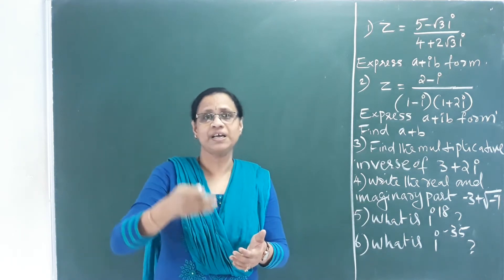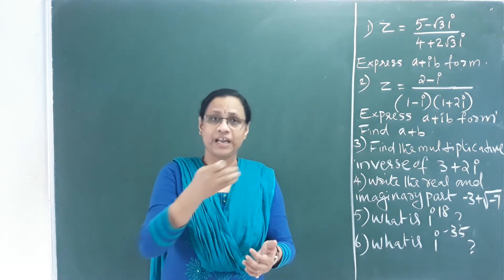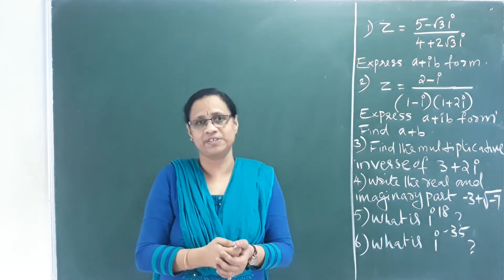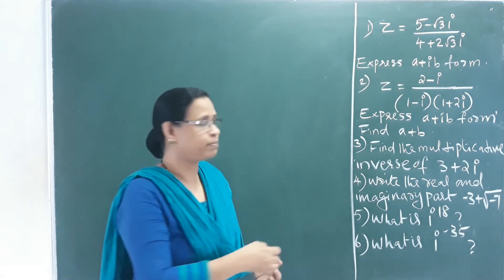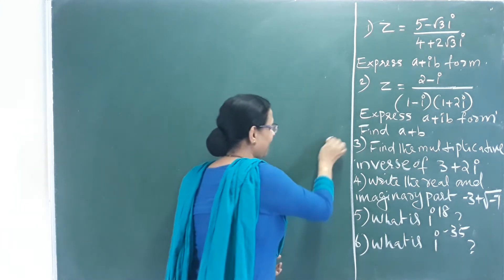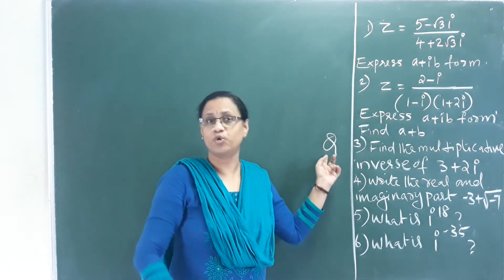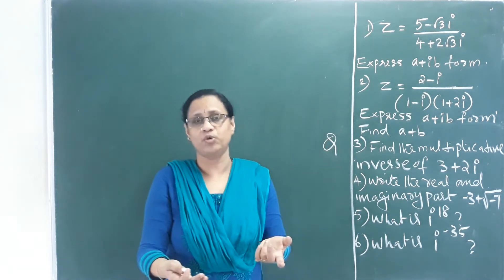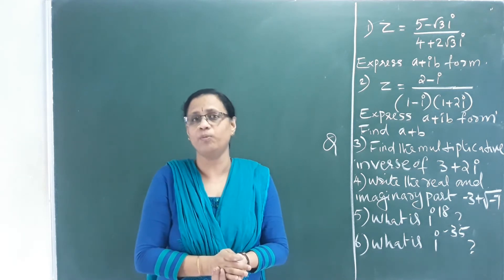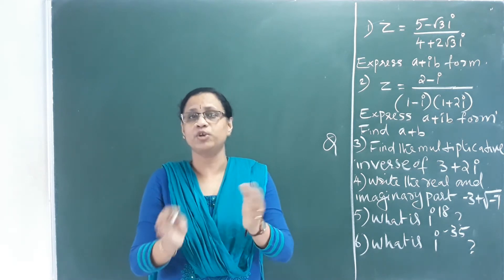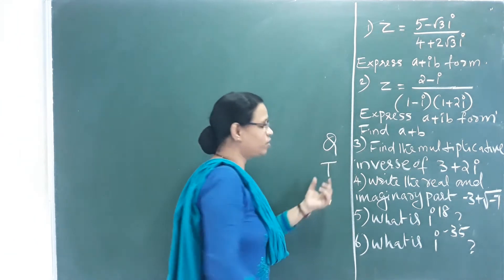Numbers written in the form P/Q are called Rational Numbers. In the P/Q form, P and Q are integers and Q is not zero, so these numbers are called Rational Numbers.